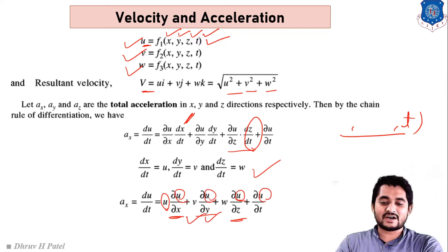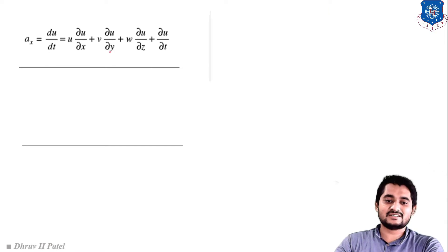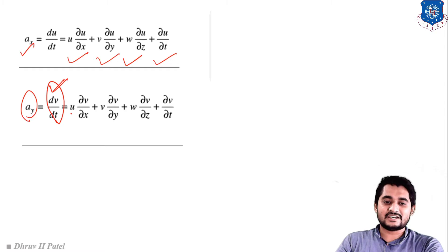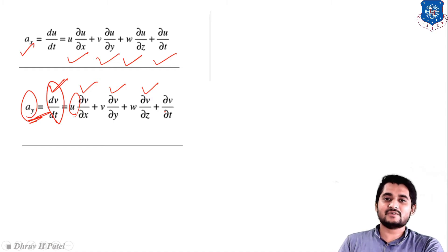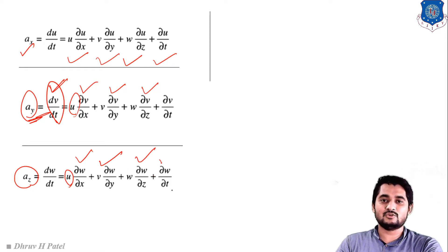Similarly, we can derive equations for the y and z directions. For the x-direction: ax = u(∂u/∂x) + v(∂u/∂y) + w(∂u/∂z) + ∂u/∂t. For the y-direction: ay = u(∂v/∂x) + v(∂v/∂y) + w(∂v/∂z) + ∂v/∂t. For the z-direction: az = u(∂w/∂x) + v(∂w/∂y) + w(∂w/∂z) + ∂w/∂t.